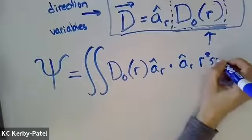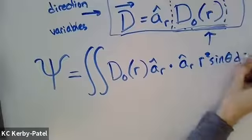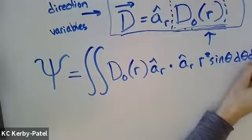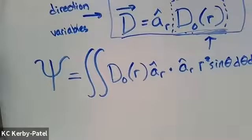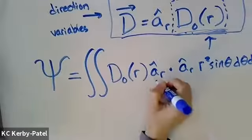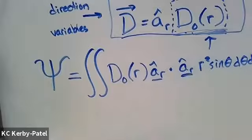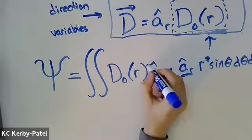The surface normal vector on a sphere is a hat r times r squared sine theta d theta d phi. This a hat r and this a hat r are parallel, so their dot product is one.